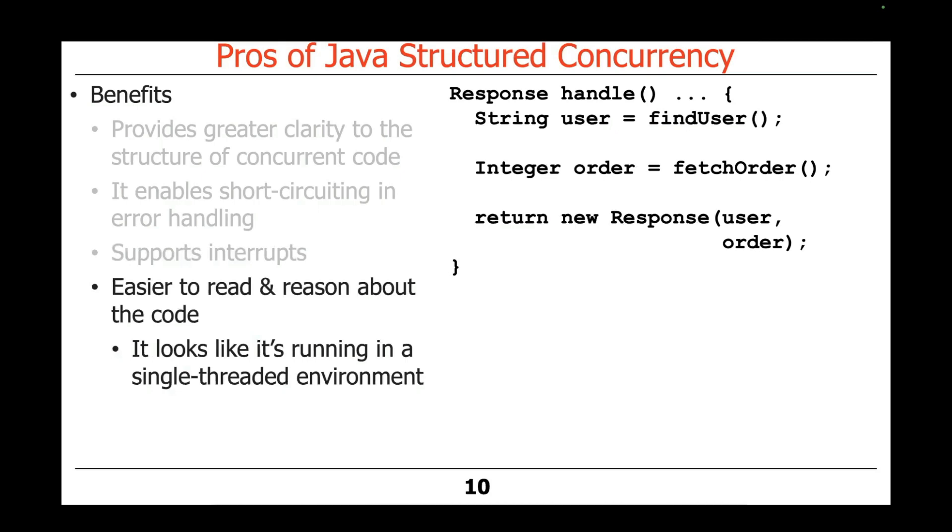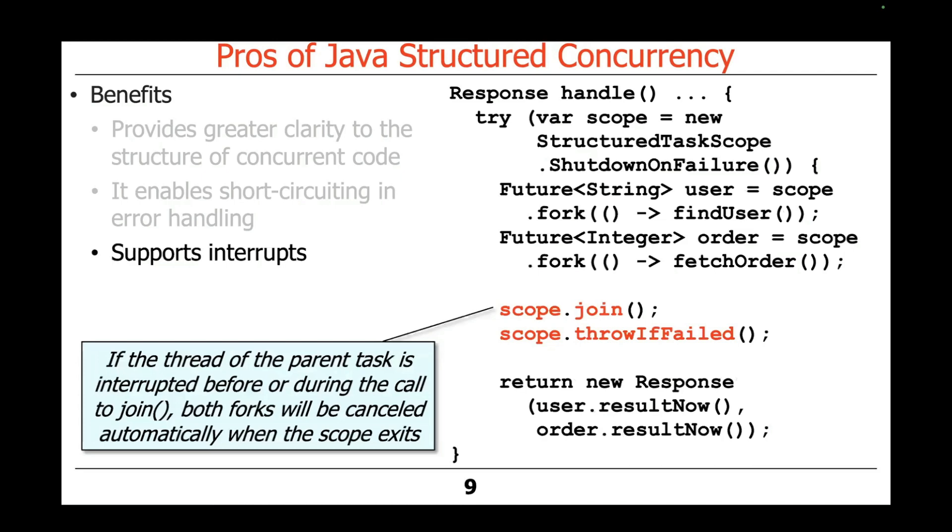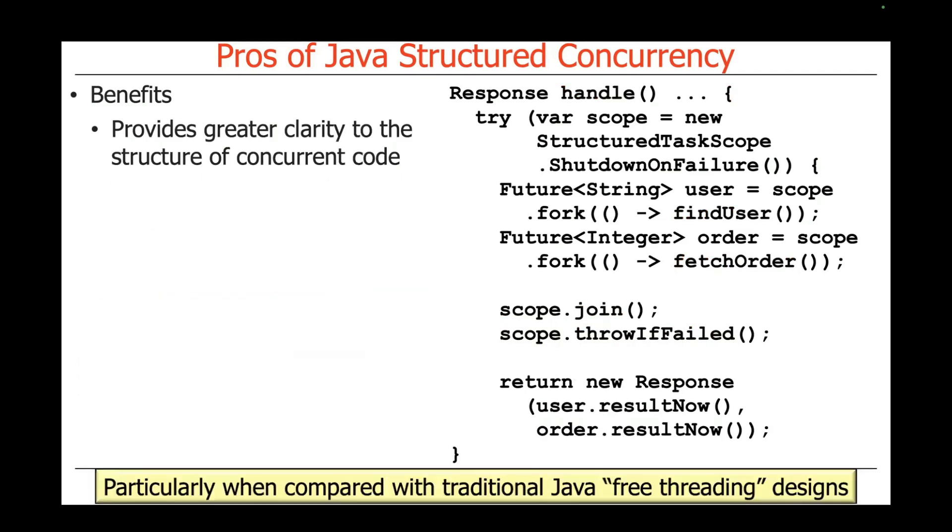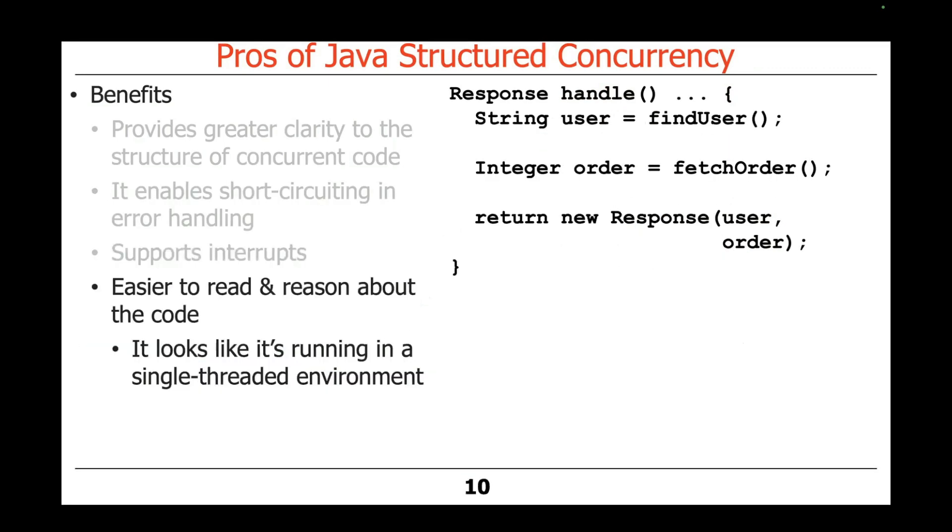And it's also at least arguably easier to reason about the code, read the code, because it looks very much like you're running in a single-thread environment. You're finding the user, you're fetching the order, you're taking the results, you're making a new response. The difference, of course, is these things are actually able to run in parallel. So that's the nice feature that we have. We can run these things in parallel whereas before this would be run in a purely sequential way.